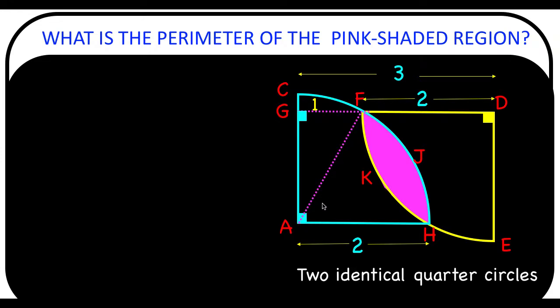Clearly, AF is a radius of the blue quarter circle. And since the radius of this blue quarter circle is given to be two units, then the length of segment AF must also be two units. Let's focus our attention to this right triangle AGF.